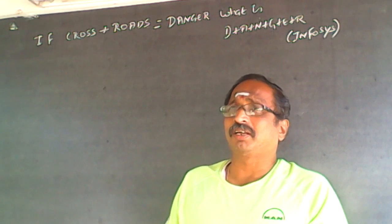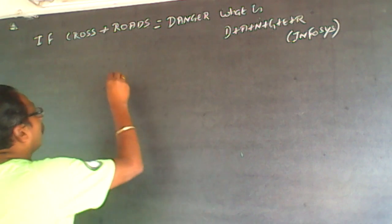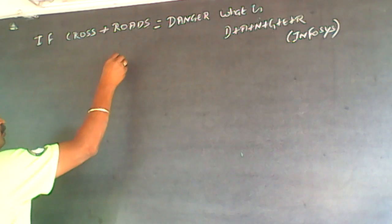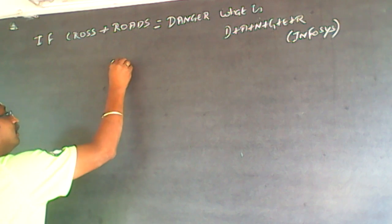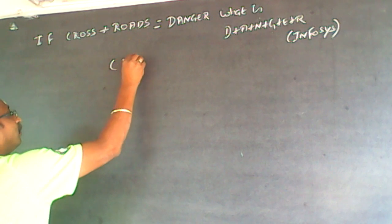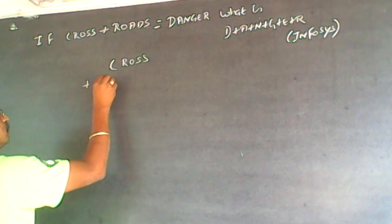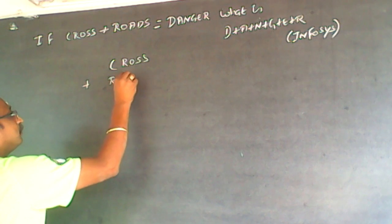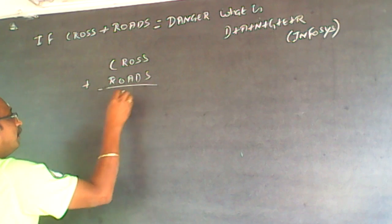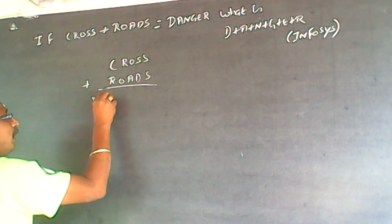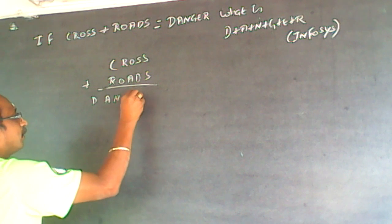What we do is write it vertically, the way you usually do math problems. CROSS plus ROAD is equal to DANGER.